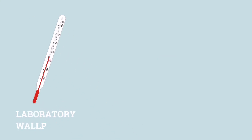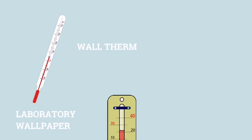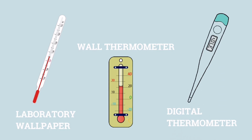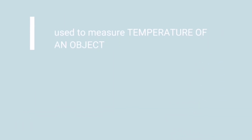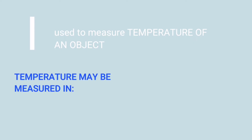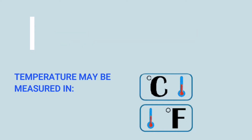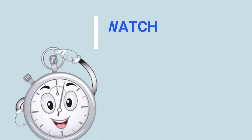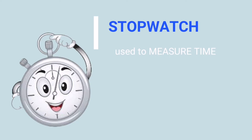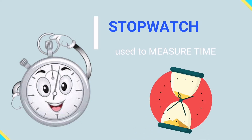Laboratory thermometer, wall thermometer, and digital thermometer — these tools are used to measure the temperature of an object. Temperature may be measured in degrees Celsius and degrees Fahrenheit. Stopwatch — it is used to measure time.